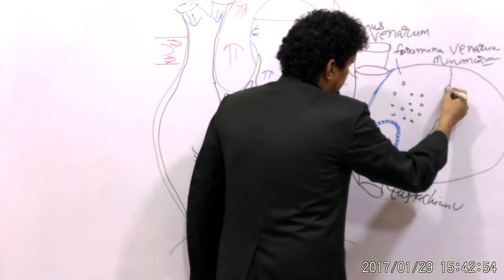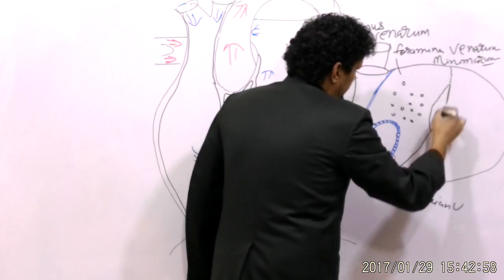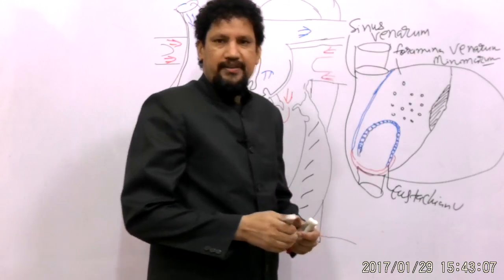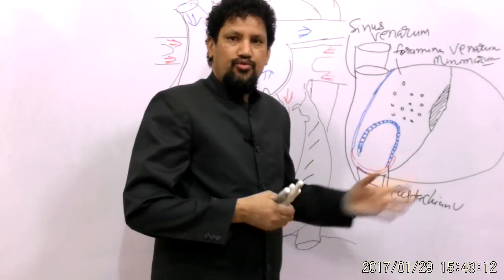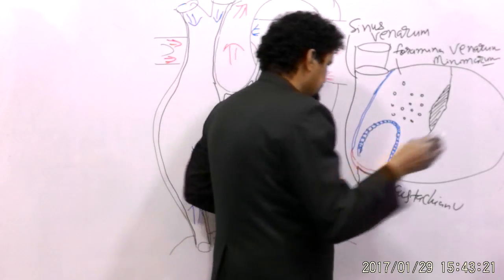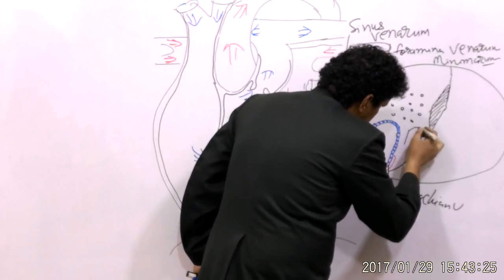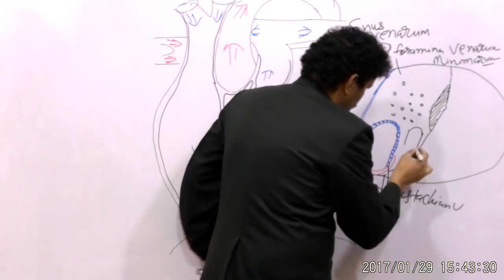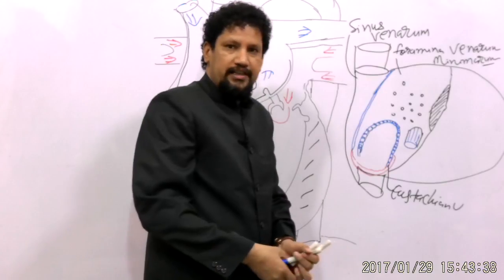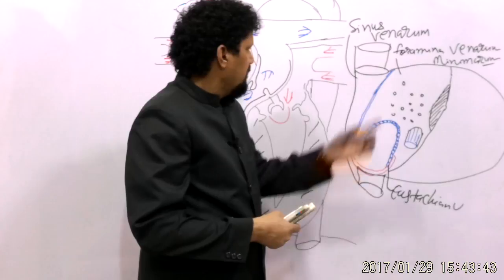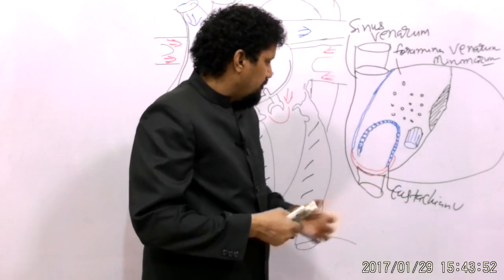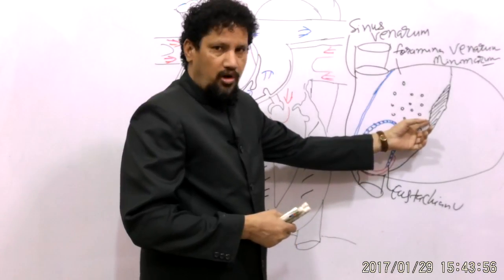This part has the base of the septal cusp, which is the cusp of the tricuspid valve regulating the flow of blood from the right atrium to the right ventricle. Here we can see the opening of the coronary sinus. There are three venous openings bringing poorly oxygenated blood from the body including the heart: the superior vena cava, the inferior vena cava, and the coronary sinus. The coronary sinus opening is located between the tricuspid valve opening and the inferior vena cava.